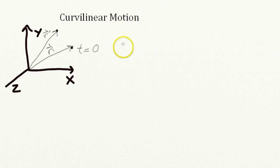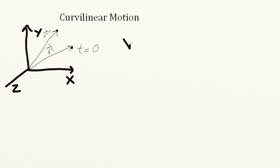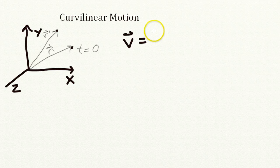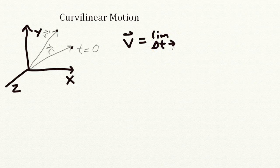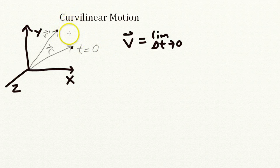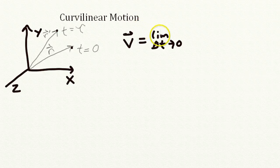Now from these two vectors we can write the velocity vector. Formally, this will be the vector in the limit that the change in time, delta t, goes to 0. So that's t equals 0, t equals tau. So the limit that tau goes to 0.